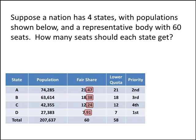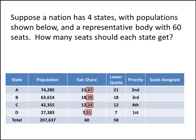With those two extra seats, we figure out the total seats for each state. Since D had first priority, D gets the first extra seat. Since A had second priority, A gets the second extra seat. But now we're out of extra seats — we had 58 from our lower quota and only two left over to reach 60. So state B stays at 18 seats, and C also stays the same with 12. If we add up all those assignments, we get the 60 seats we're looking for. That's Hamilton's method.